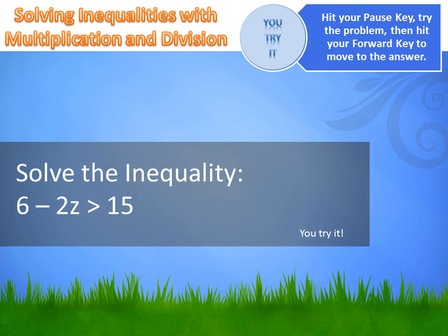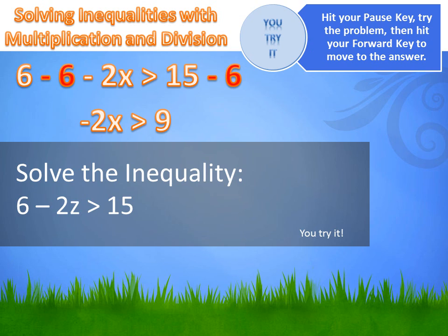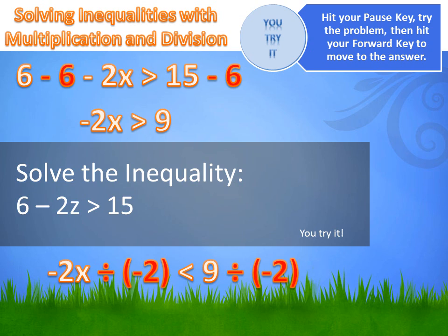Solve the inequality 6 - 2z > 15. This is a two-step solution. Subtract 6 from both sides — you can do that without changing the inequality sign — giving -2z > 9. Now divide both sides by -2. Since you're dividing by a negative number, reverse the inequality sign, giving z < -4.5.